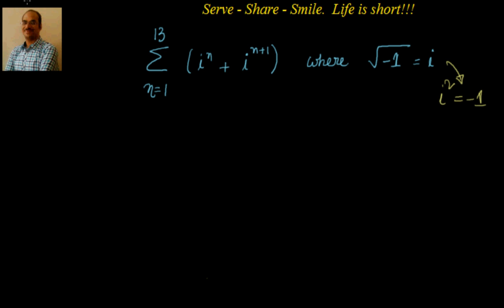So let us understand this. We will try to go into the next step and simplify this and see what happens. For that we will separate them. We will say n = 1 to 13, the first one is i^n, and the second one is n = 1 to 13 again, but this time it is i^(n+1).